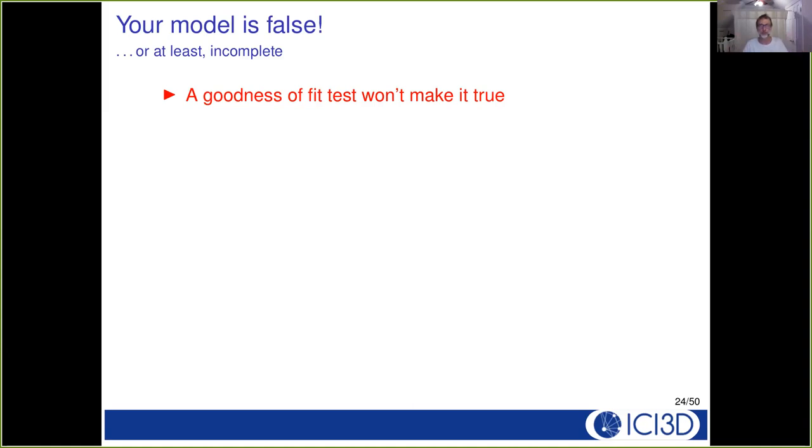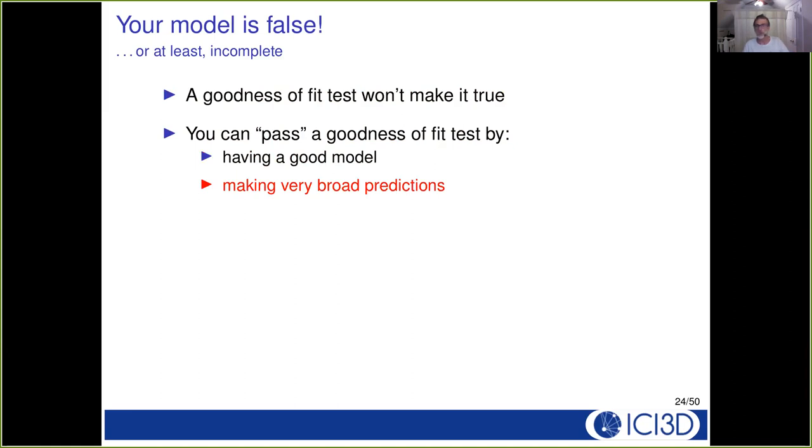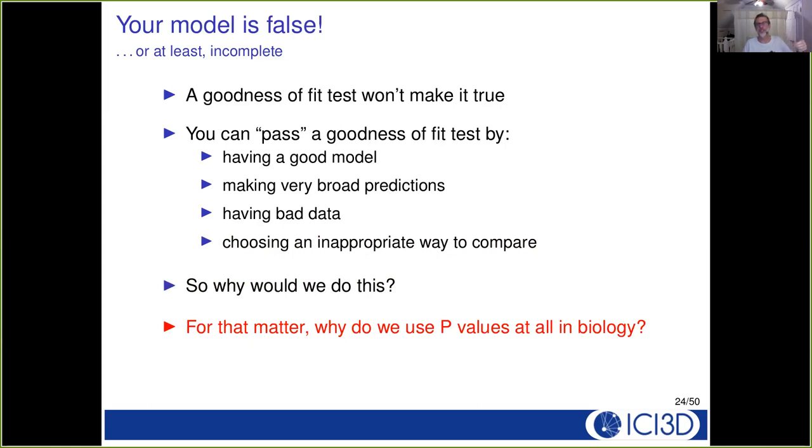And so we want to avoid at all costs saying well the difference isn't significant so the model and the data are the same and the model is right or the model is true. The model is false or at least incomplete and no goodness of fit test will make it true. There are no good ways to try to pass a goodness of fit test. There are a lot of ways to pass a goodness of fitness. Your model might be good, that certainly increases the likelihood that you won't see the difference between the model or the data. But you could also have a model that makes very broad predictions that isn't very precise. You could have very noisy data or you could have some sort of there are other technical things that people do usually accidentally I hope that end up by having non-significant goodness of fit test. You want to be very very careful before you look at the significance of your goodness of fit test and here's the digression where I repeat myself.